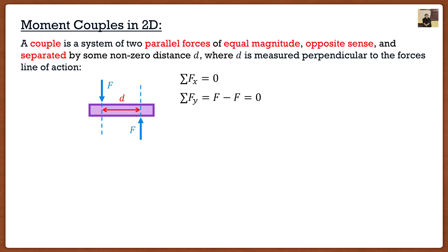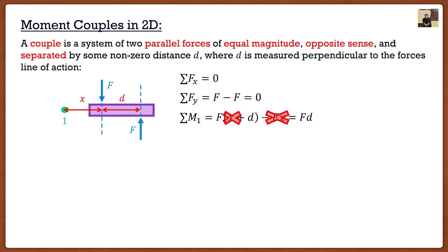Where the trick comes into play is when we take the sum of the moments. Let's say we want to take the summation of moments around point number one. The summation of moments around one is going to be the force F multiplied by the perpendicular distance x times d. We can see it starts to create that counterclockwise rotation, therefore it's positive. For the force on the left side, it's simply F times x, and since it creates clockwise rotation, it's negative. Notice that F times x appears on both sides, so we can cancel it out, and we get that the summation of moments is going to be the force times the distance between them.